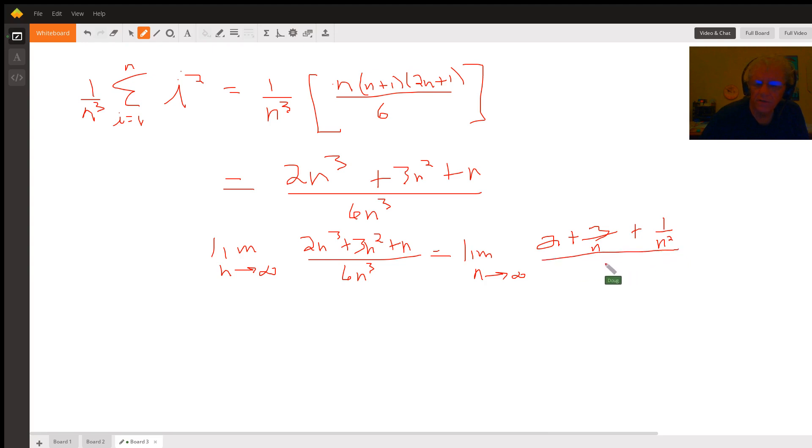And now as n approaches infinity, these fractions approach zero, so the limit is two over six, or one third.